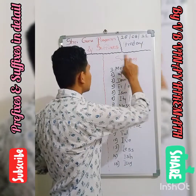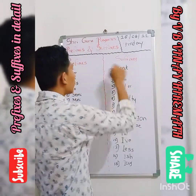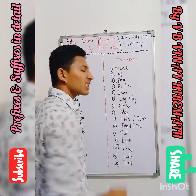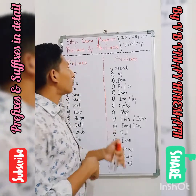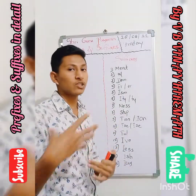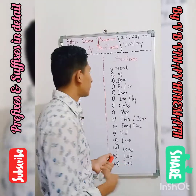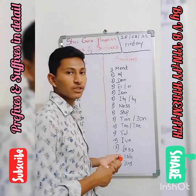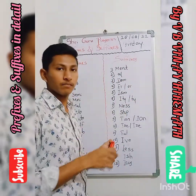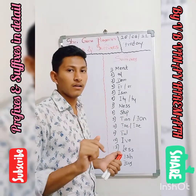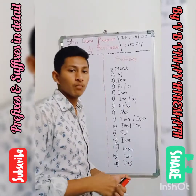Now let me come to the Suffixes. This is the second part, called Suffixes. The suffixes are letters which will be added or which will occur at the end of words. The suffix '-ment': improvement, commitment, engagement. The suffix '-al' (A-L): verbal, like that. The suffix '-dom': kingdom, boredom — and so many others.